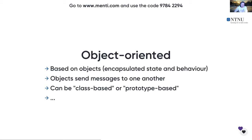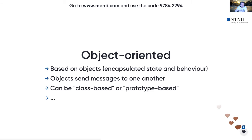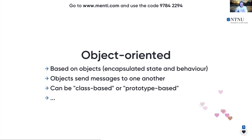We have object-oriented, which you've covered well in previous courses. One thing to add is that object orientation can be class-based or prototype-based. There were early object-oriented models that were not class-based — like Self, a language that was a precursor to Java where you had prototypes instead of classes. JavaScript is also not class-based; it has prototype-based object orientation rather than class-based. Those are two fundamental forks in the paradigm.